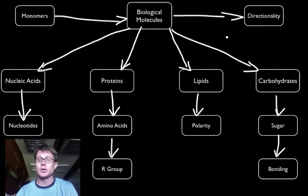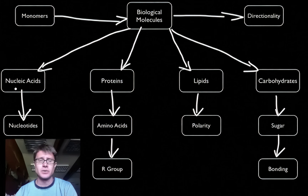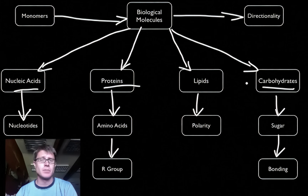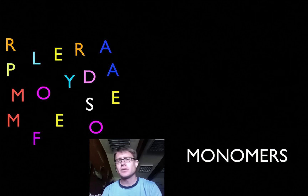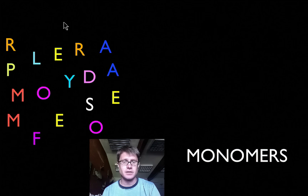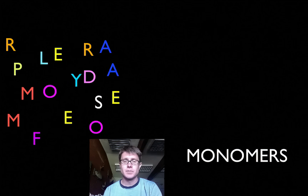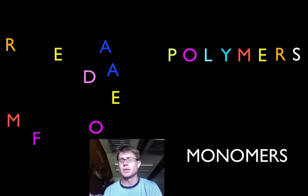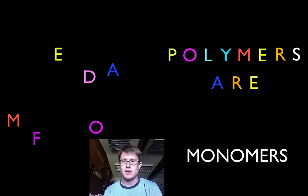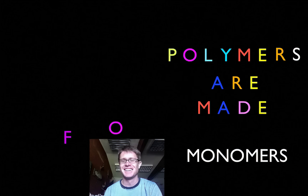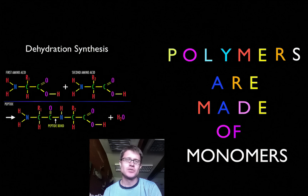Now if you have monomers, when we stack those monomers together there's going to be clear directionality. In nucleic acids, proteins, and carbohydrates, depending on which direction we're adding the monomers we get different structures and different functions. Monomers are the building blocks of polymers — the analogy is that letters, when you put them together, become words. The monomers eventually become polymers, and when we take monomers and put them together we can have meaning.